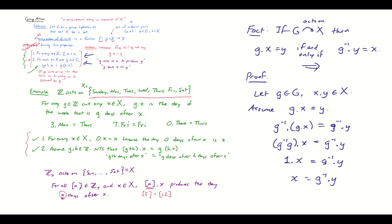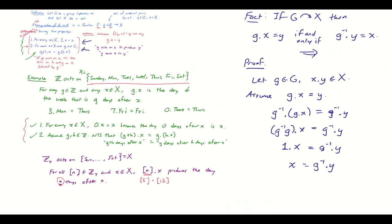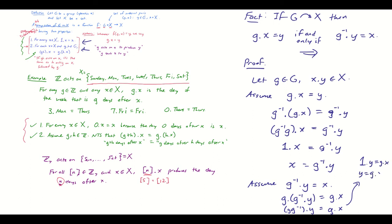For the other direction, assume g⁻¹·y = x. Act on each side with g: g·(g⁻¹·y) = g·x. By the composition rule, the left side becomes (g★g⁻¹)·y = e·y = y. So y = g·x, which means g·x = y. Both directions are proved. So in addition to knowing how the identity and compositions act, we also know how inverses act on set elements.